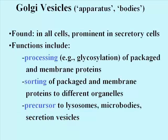Golgi vesicles are usually found in the vicinity of rough endoplasmic reticulum, from which they accept and then later process newly made packaged proteins. The processing can include adding sugars to make glycoproteins, and/or hydrolyzing parts of a polypeptide that are not going to be needed in the mature functional protein. Since the Golgi vesicles are a kind of way station in making proteins destined for different locations, they have to sort the proteins so that they end up in the correct locations. Golgi vesicles eventually bud to become vesicles that include lysosomes, microbodies, or secretion vesicles.